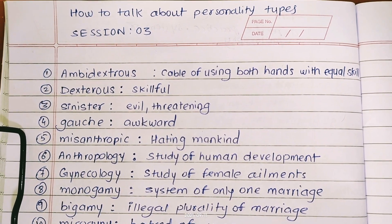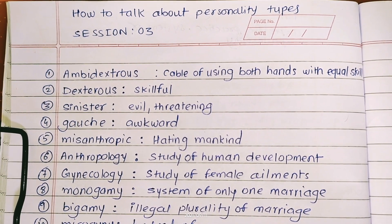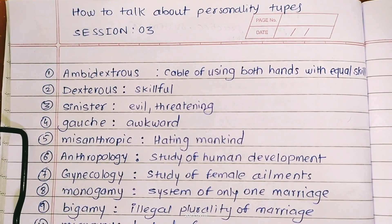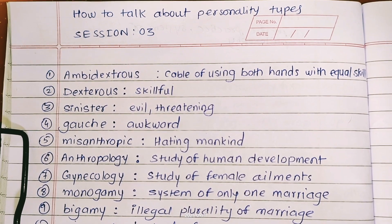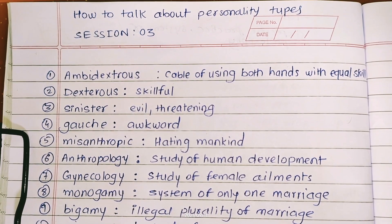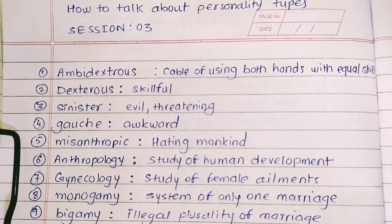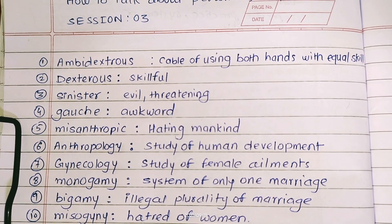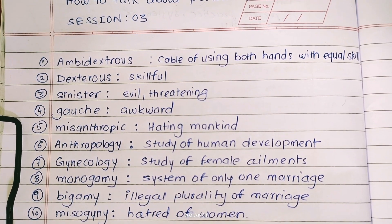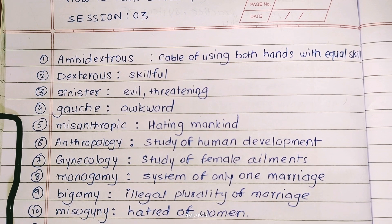My next word is sinister. Meaning: evil, threatening. Sinister also means left hand, and left hand is associated with a negative word.